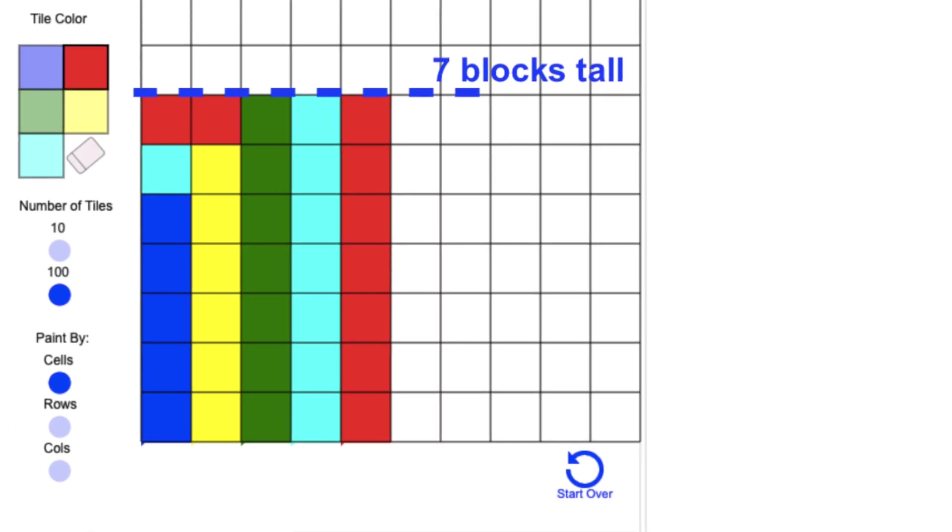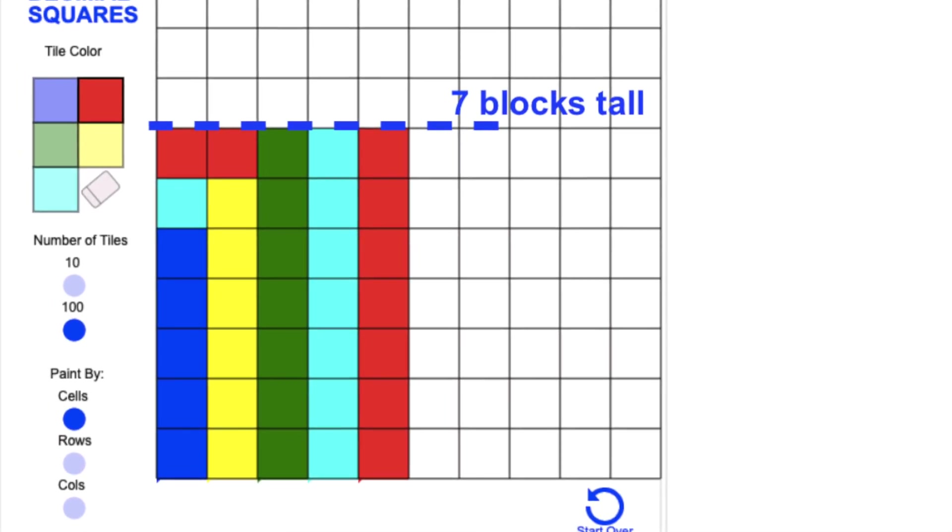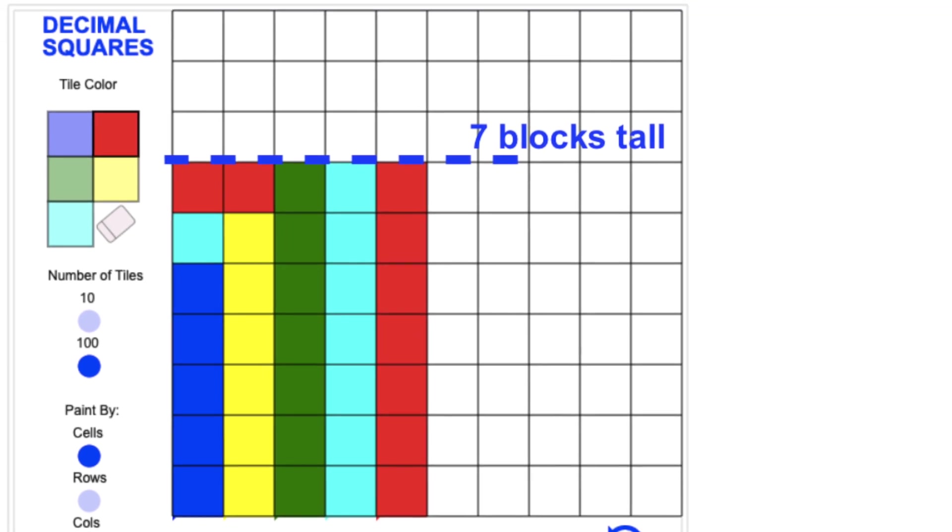Normally I have students do this with unifix cubes if they're in front of me, but obviously you guys are just watching at home, so that's why we're using the virtual manipulatives. You can see that when I rearrange these towers, every single tower now has seven blocks.